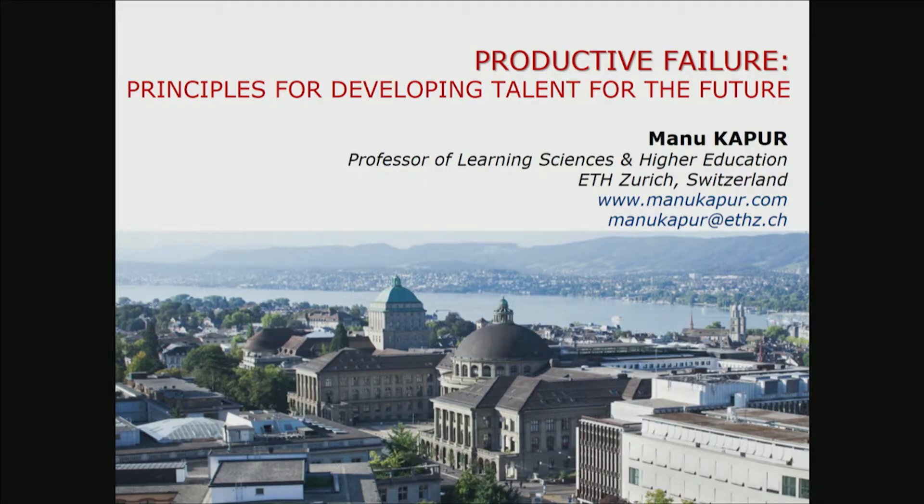The thing I'm going to talk about is productive failure. As a learning scientist, I'm going to come at it from the point of learning — how do we develop talents for the future? And what does it mean to design learning environments for that talent development to take place? I'm going to share four critical principles derived from the sciences of learning, and then a concrete example of a design that embodies those principles.